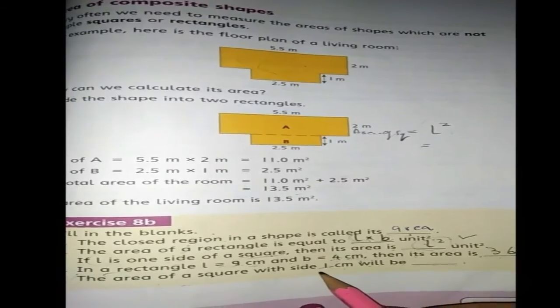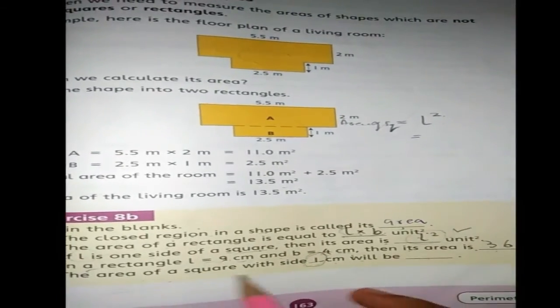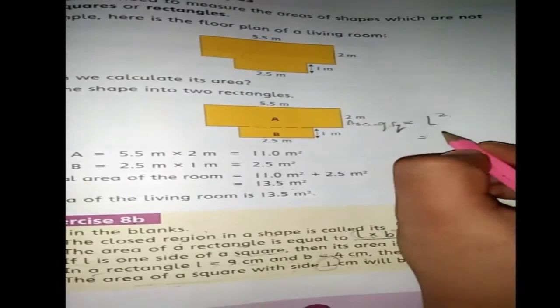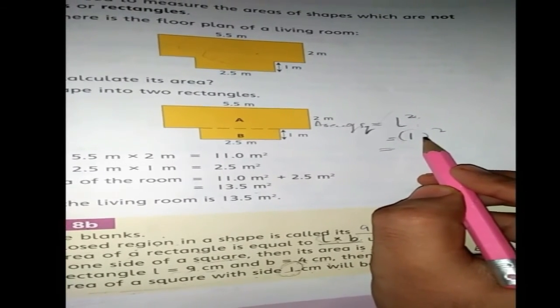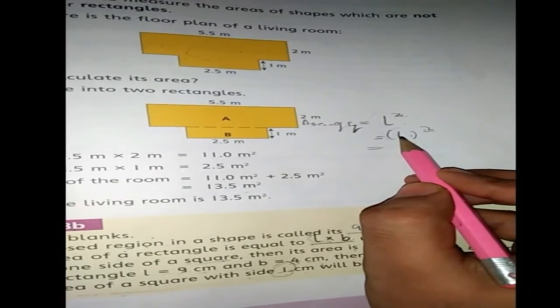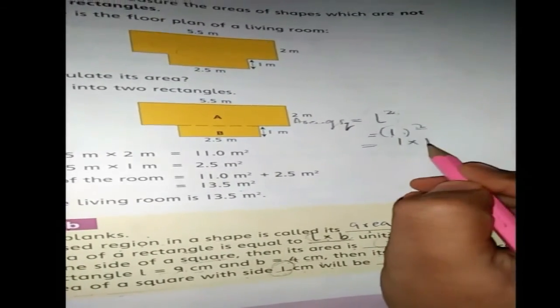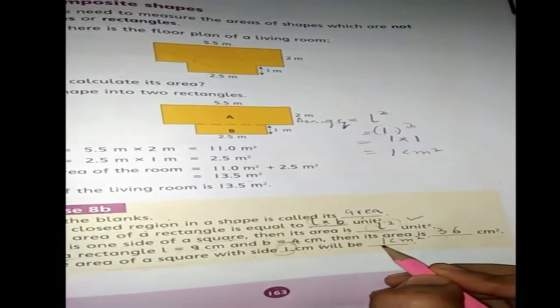For the last blank: the area of a square with side 1 cm will be dash. We know a square has 4 equal sides, and the formula is L squared. One side is 1 cm, so we put L equals 1 into the formula and multiply 1 by itself. One times one is 1, so the answer is 1 cm squared. This way all our blanks have been completed.